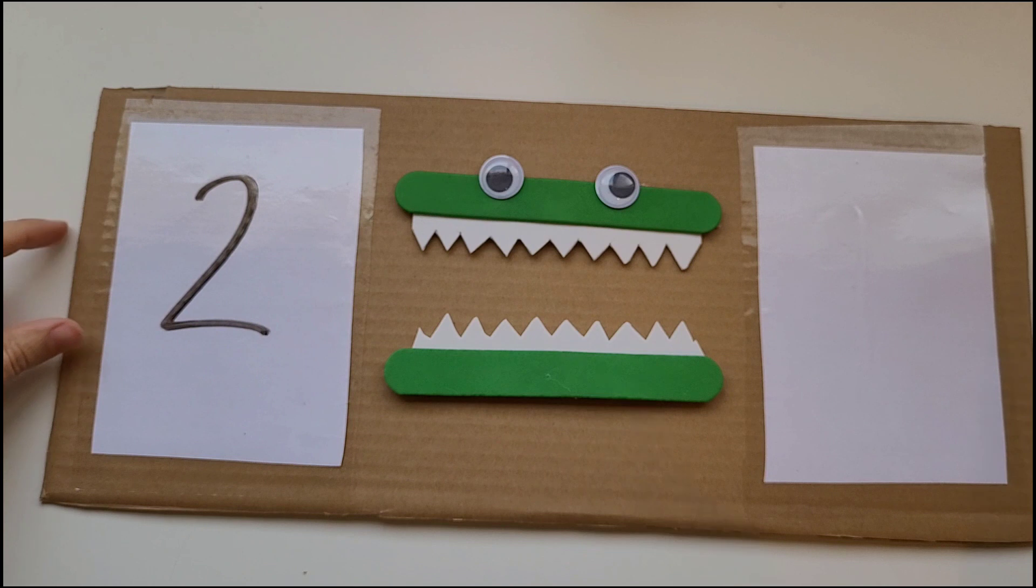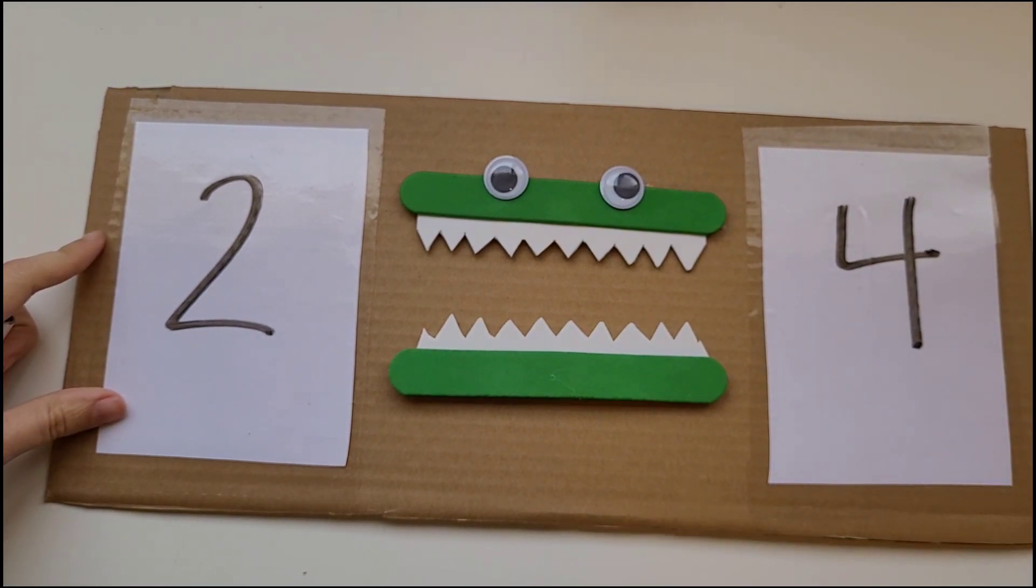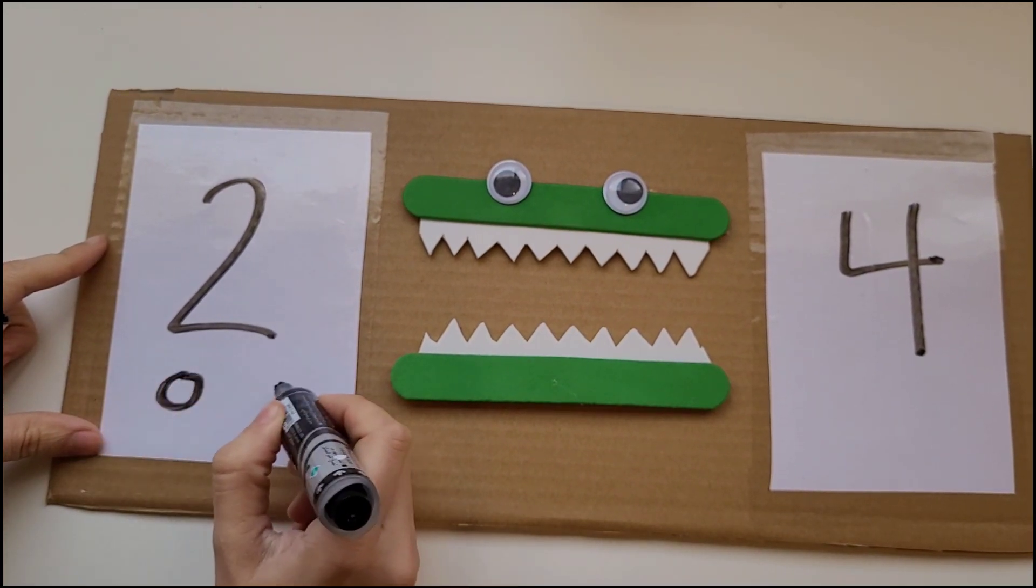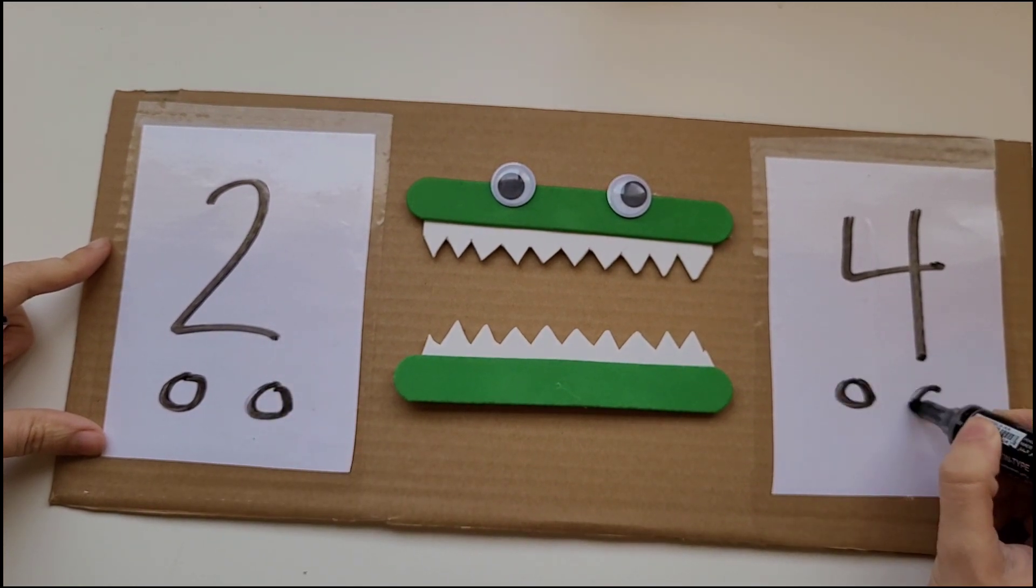Using a dry erase marker we can write a number on each square. We can also draw circles to show what each number represents.